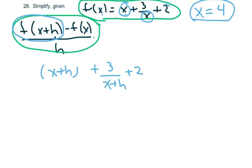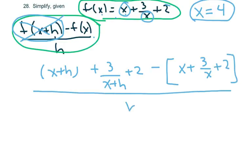Now that took care of this part. Now we have to subtract the whole function. And the whole function is x plus 3 over x plus 2. And then it's all over h.